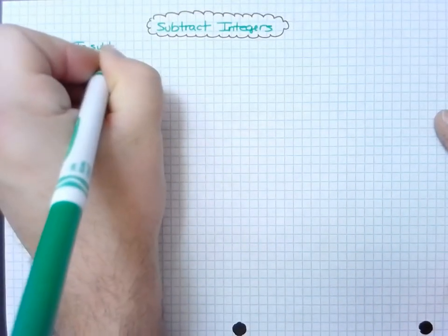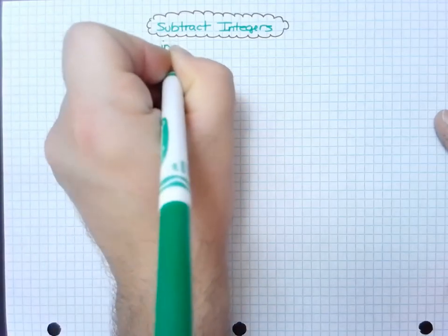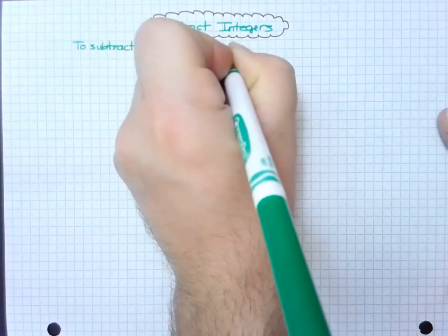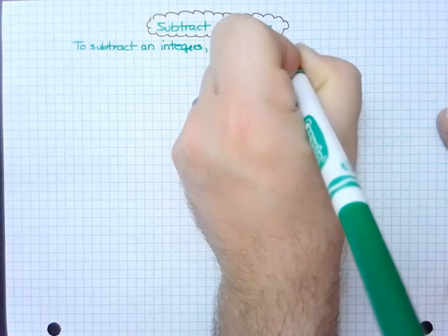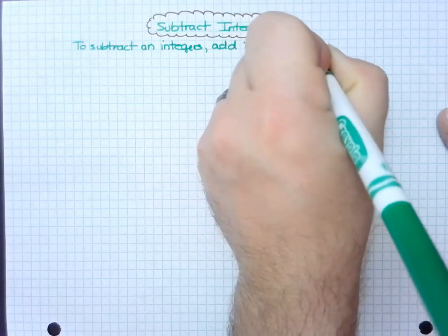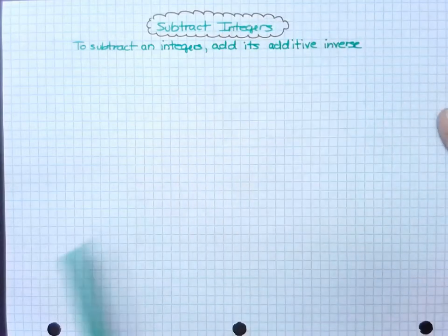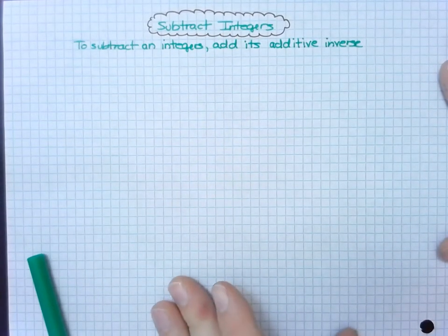To subtract integers, we can add its additive inverse. So additive inverse again is to be able to add its opposite.